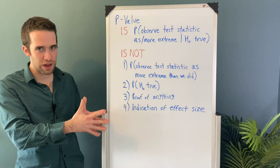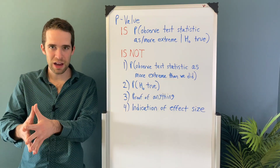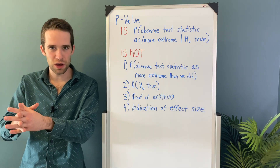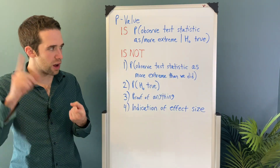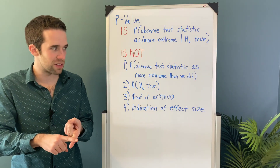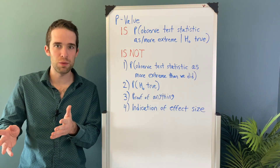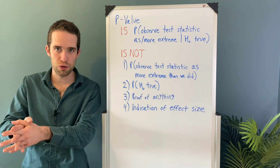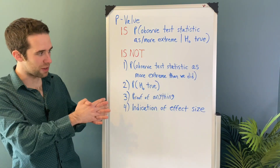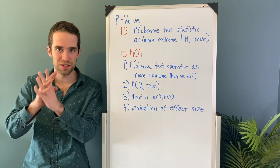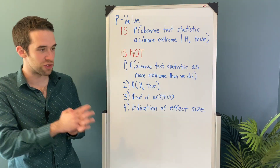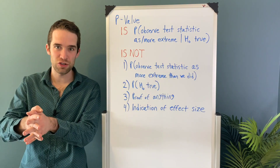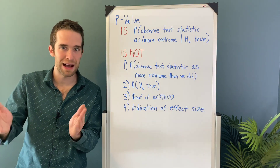Now I have a variety of other things which a p-value is not, and these are some of the most common misconceptions of p-values. A p-value is not the probability we observe a test statistic as or more extreme than we did, leaving out that whole part about the null hypothesis being true. A p-value is not the probability that the null hypothesis is true. A p-value is not proof of anything, and a p-value is not an indication of effect size or effect magnitude.